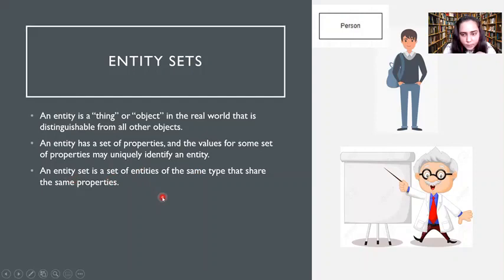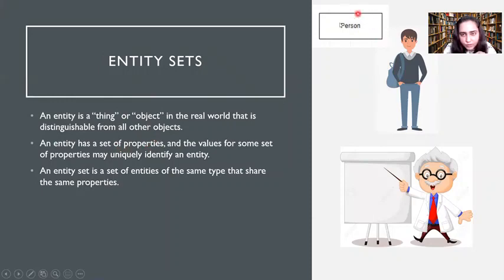In a relational model, which I'm also linking below in case you haven't watched it, we deal with tables. So an entity is essentially a table. Whatever columns you create in the table are the properties or attributes of an entity. For example, in a university, a person would be an entity. You can create a set of people — students and professors — and all those things together make an entity set.